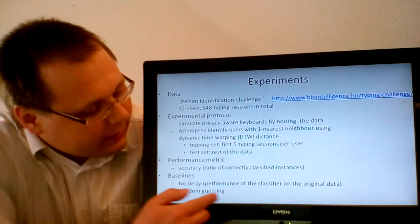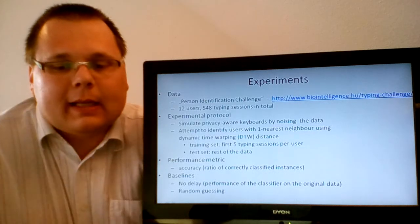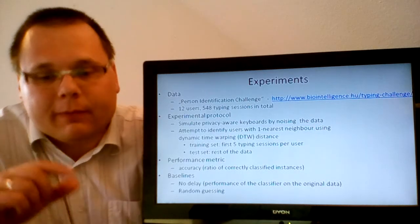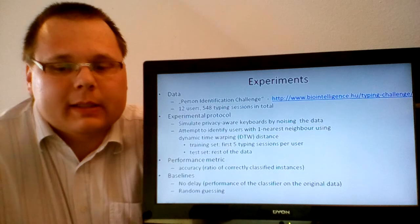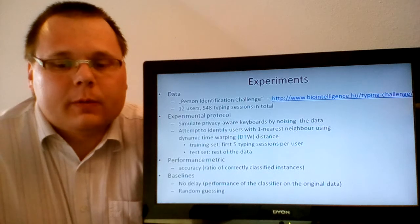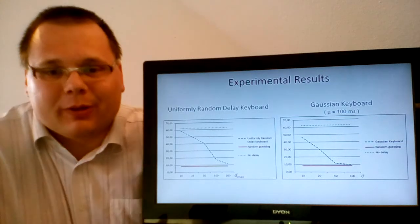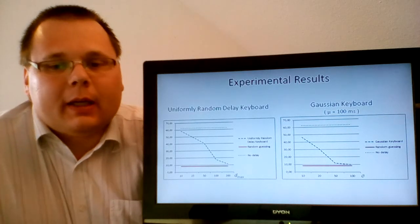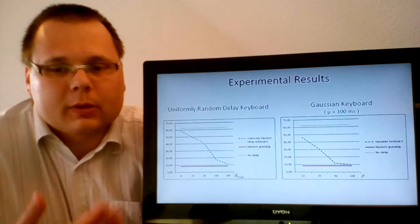Now, I was talking about random guessing, just to be on the safe side, so this is not a reasonable recognition system. And this is obvious that any reasonable recognition system should work much better than random guessing. And therefore, if privacy-aware keyboards lead to a performance that is comparable with the performance of random guessing, this means that privacy-aware keyboards do the right job in terms of making personal identification difficult. And this is actually what happens, and this experimental results are shown on the next slide.